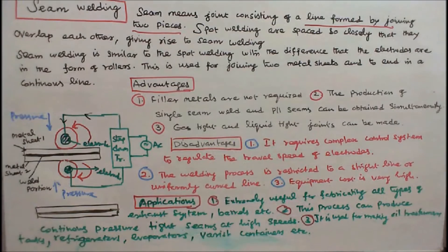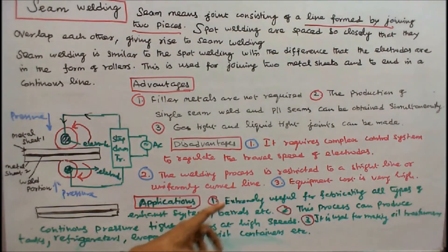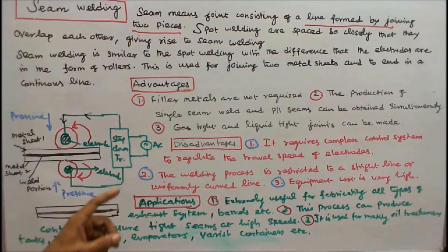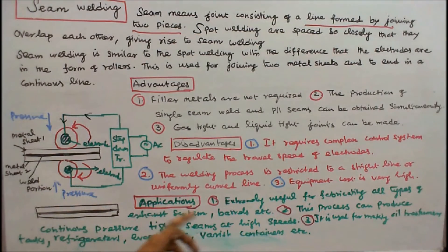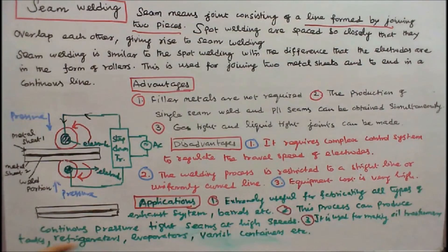Applications: Number 1 — extremely useful for fabricating all types of exhaust systems, barrels, etc. Number 2 — this process can produce continuous pressure-tight seams at high speeds. Number 3 — it is used for making oil transformer tanks, refrigerators, evaporators, varnish containers, etc.